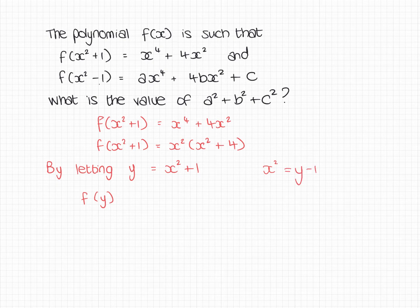So f of y. So we said f of x squared plus 1 is equal to this. So this x squared, I'm going to replace by y minus 1. So I'm going to have y minus 1 for that. And then I'm going to say, well, this x squared plus 4 must be the same as y minus 1 plus 4. So y minus 1 plus 4 is the same as y plus 3. So I've now got that factorized quite nicely into two brackets.